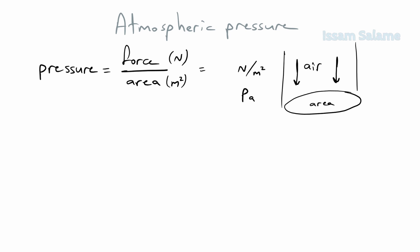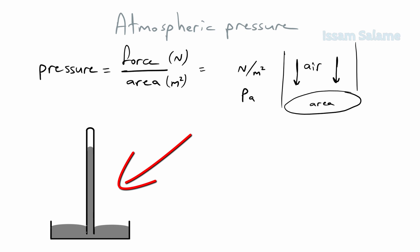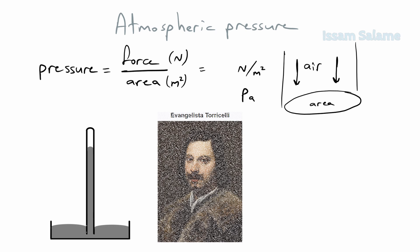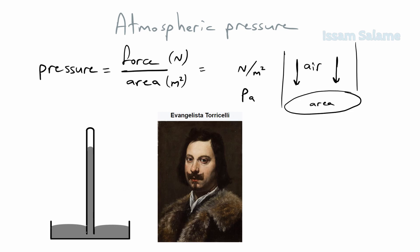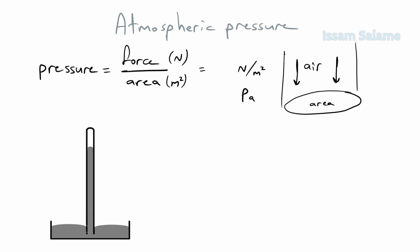Atmospheric pressure used to be measured using a device called a mercury barometer, invented by Italian physicist Evangelista Torricelli. To build the barometer, he filled a one-meter glass tube with mercury, then immersed the tube upside down in a dish filled with mercury. The level of mercury inside the tube dropped a little and stopped, and the volume above the mercury column inside the glass tube is vacuum.